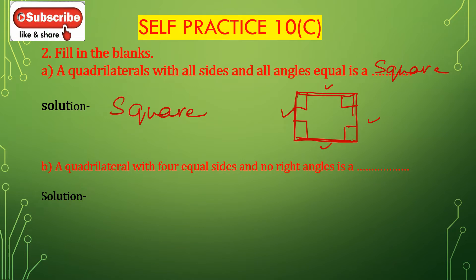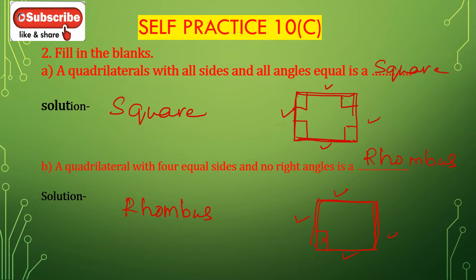Bit B: a quadrilateral with four equal sides and no right angles is a dash. A quadrilateral with four equal sides but the angle is not equal to 90 degrees — so this is a rhombus. The angle is not equal to 90 degrees but all four sides are equal, so the answer is rhombus.